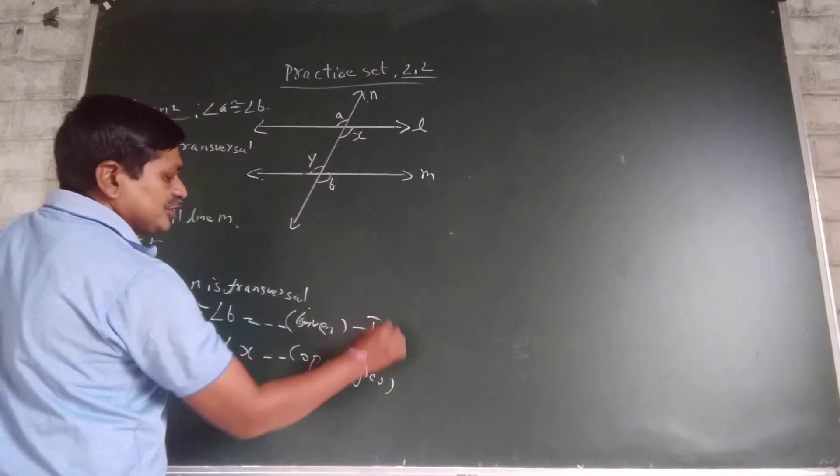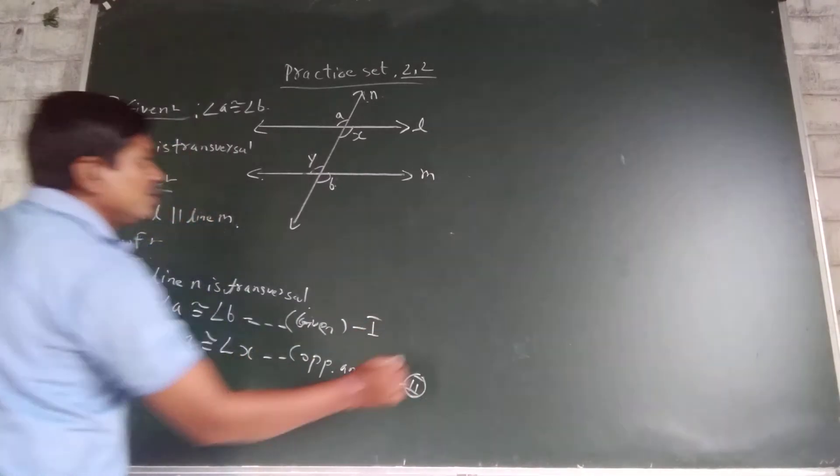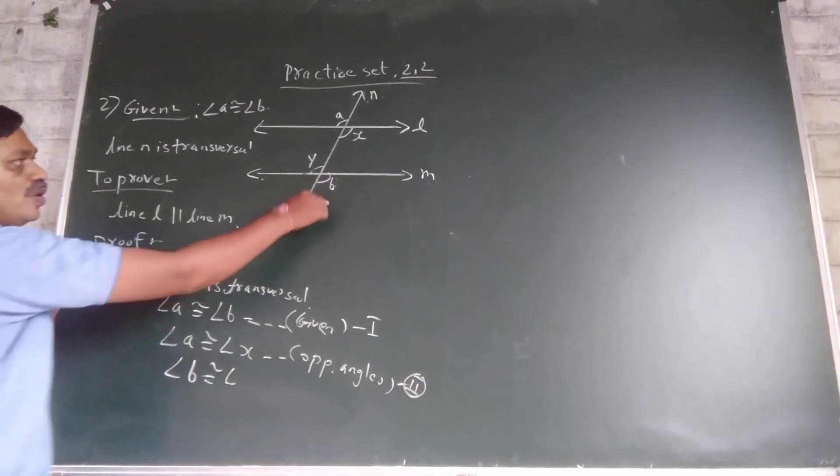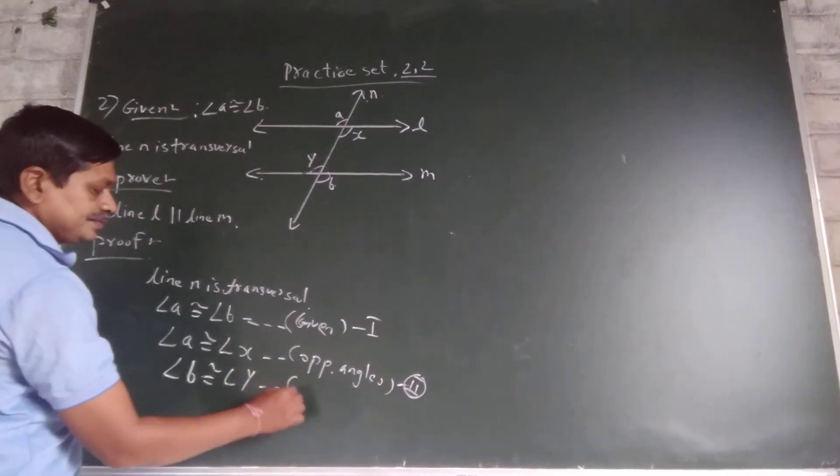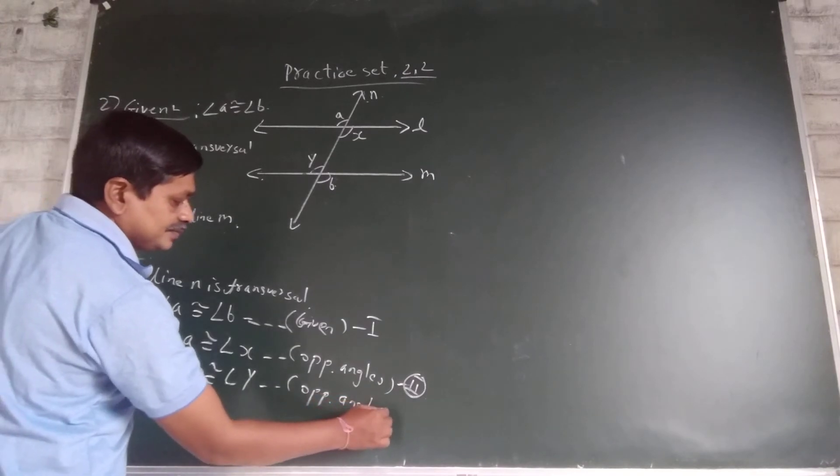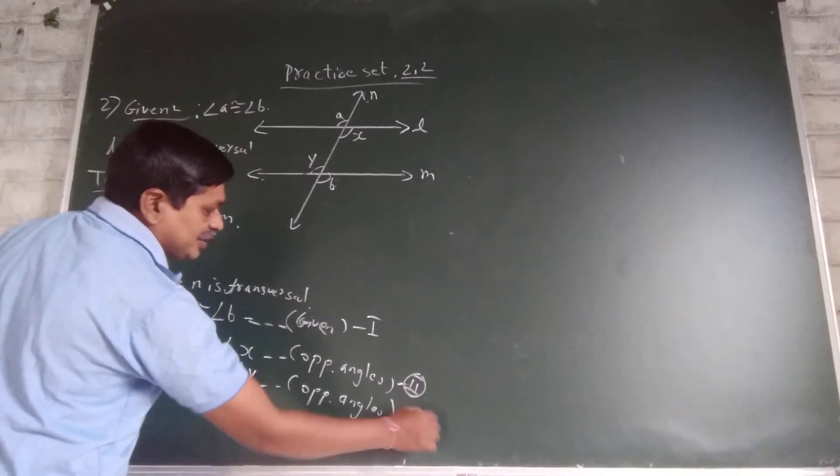Here equation 1, this equation 2. Angle B congruent to angle Y, opposite angles. Equation 3.